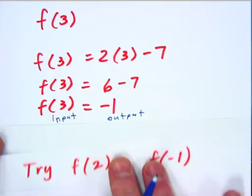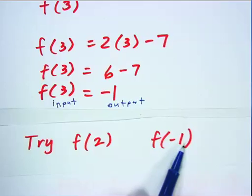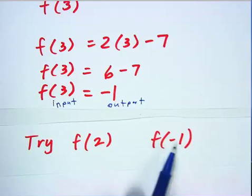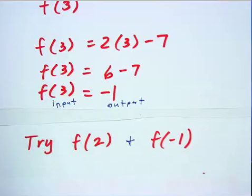Now go ahead and try two more substitutions with function notation. Substitute f of 2 and f of negative 1. So you'll be plugging in 2 as your new input and negative 1 as your second input. So these would be two separate problems that I would like you to try. You may pause the video for a moment to work those out. Go ahead and show your substitution. Make your calculation.